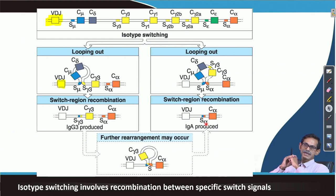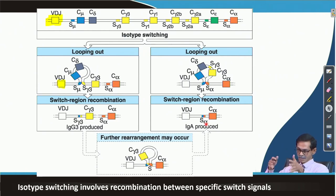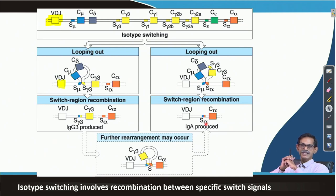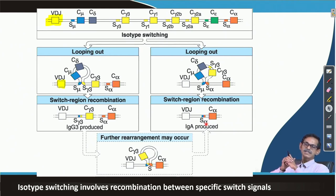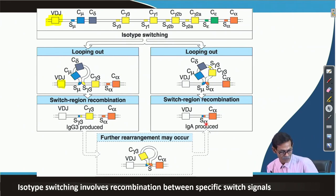This is a homologous recombination — cutting, joining, and ligation all occur, which are common to all recombination processes. This whole phenomenon is called isotype switching. The S signals — S-mu, S-delta, S-gamma — are called switch signals. In VDJ recombination we called them RSS (recombination signal sequences); here we call them switch signals or isotype switching signals.